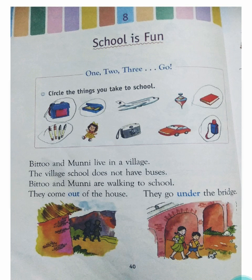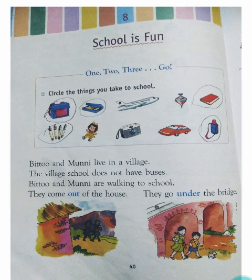We read from here. Bitu and Munni live in a village. The village school does not have buses. They don't have buses, so Bitu and Munni are walking to school — Bitu and Munni walk to school.